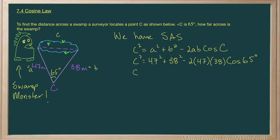Okay, let's get some multiplying going on here. 47 squared, that's 2,209 plus 38 squared is 1,444 minus multiplying all of that out together. I get 3,572 cosine of 65.